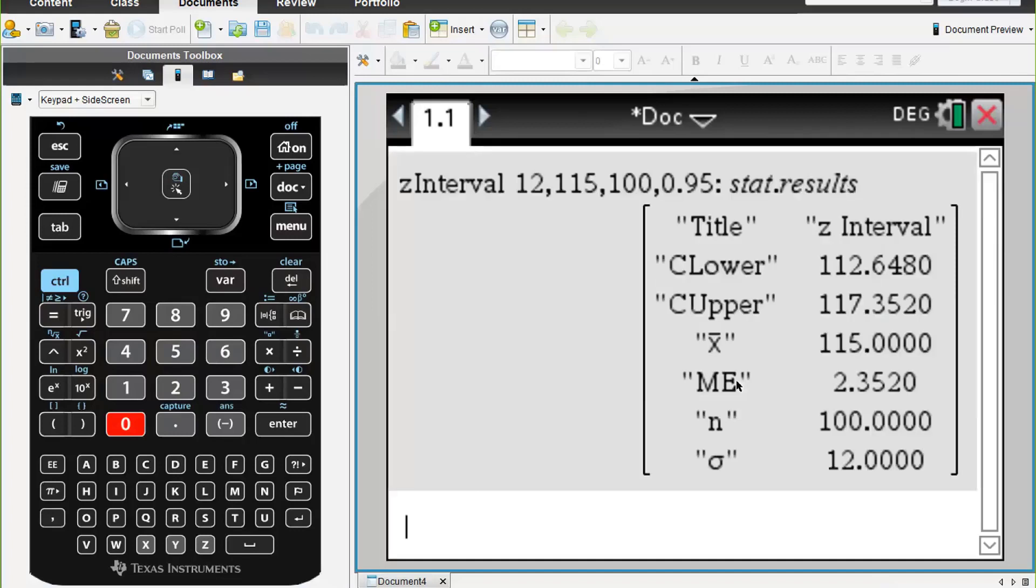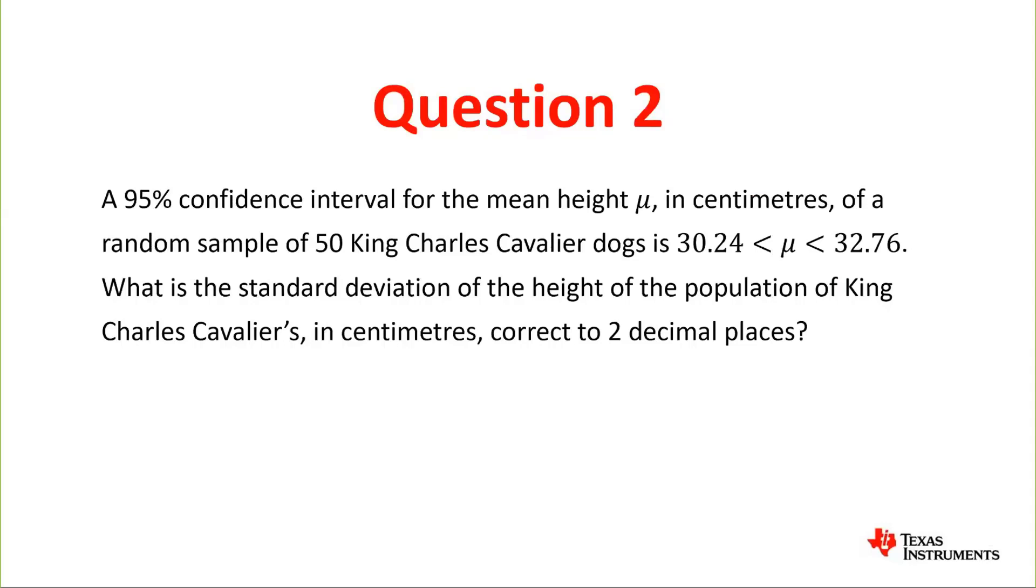And there's our interval. So to one decimal place the confidence interval is 112.6 to 117.4 grams. Question 2: a 95% confidence interval for the mean height μ in centimeters of a random sample of 50 King Charles Cavalier dogs is between 30.24 and 32.76 centimeters.